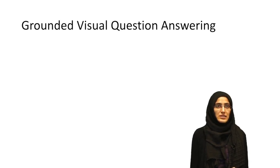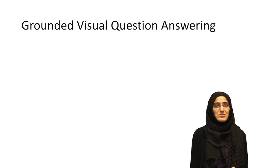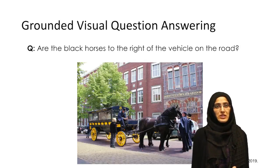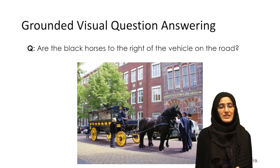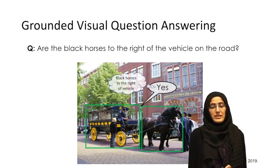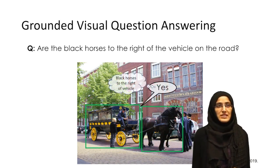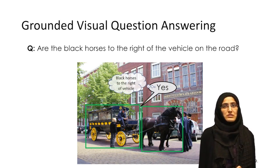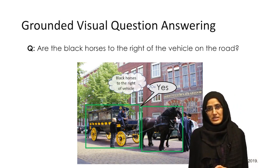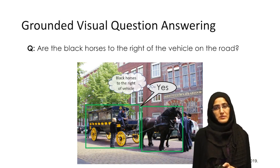We are solving the problem of grounded visual question answering. In grounded VQA, you are given an image and a natural language sentence about that image, and the task is to not only answer the question, but also localize the answer objects. For instance, the question was: are the black horses to the right of the vehicle on the road? The answer is yes, and we can see that the evidence also supports this answer.